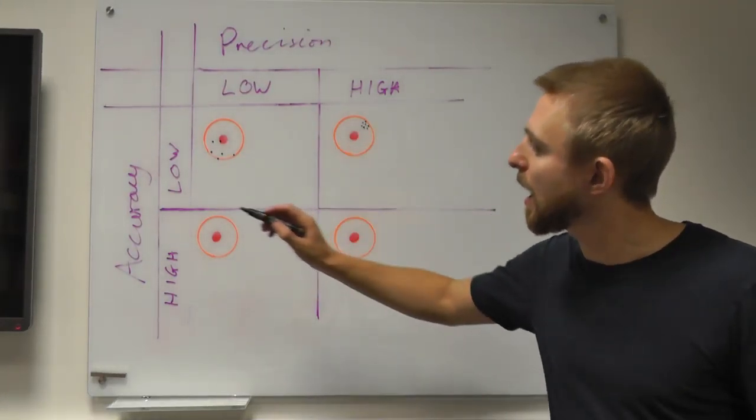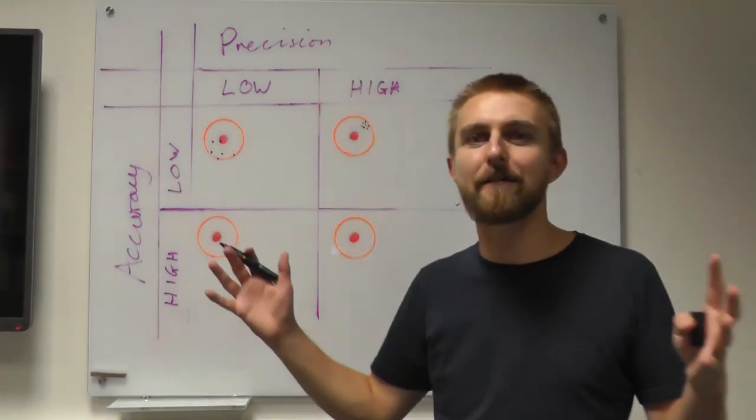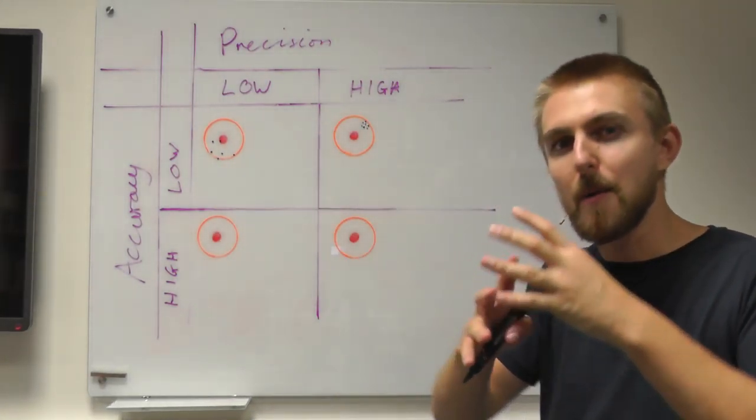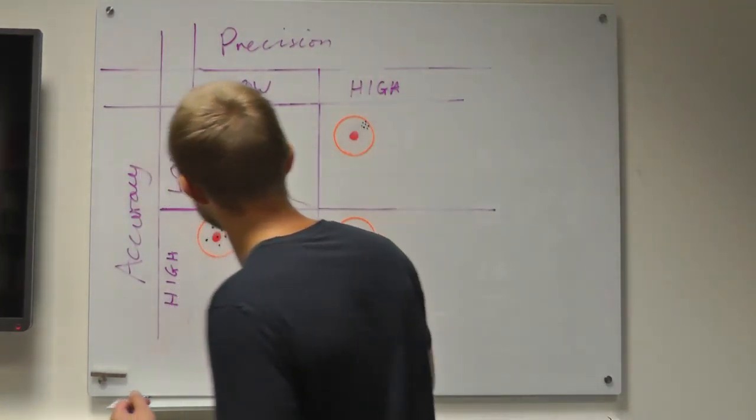Next up, high accuracy, low precision. So they are, on average, pointing at the bullseye, but they're spread out. That's not a good clustering. So they're going to look something like this.